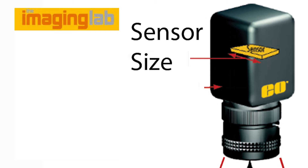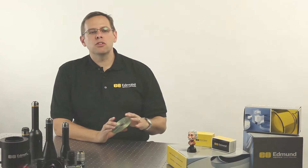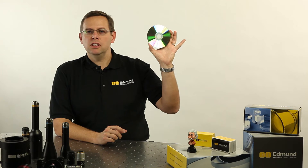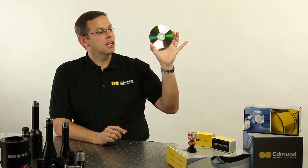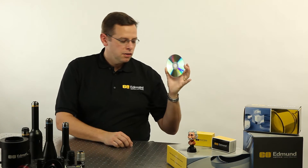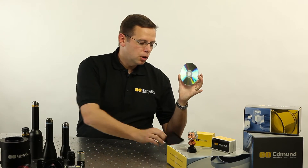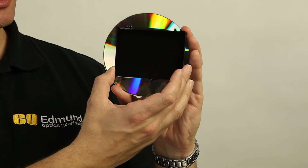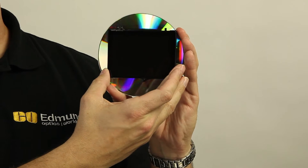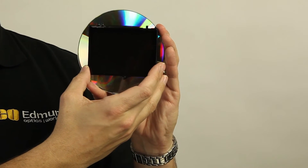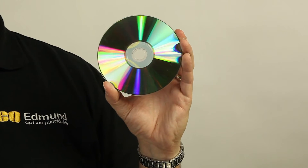Let's take a moment and try to get an understanding of why this is important. When you image through a lens, you're going to get a round field of view — something like this CD that I have here. Now, if we have a sensor size that's appropriate for it, like the back of this box, we'll notice as we put the image and the sensor over top of one another, you get sensor coverage all the way around because the image circle is large enough.